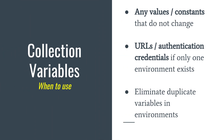Use collection variables when you have values or constants that do not change. Examples include URLs or authentication credentials — any information that repeats across requests. If it's not environment-specific, it can be a collection variable. This is practical because when you export your collection, all this information stays with the collection, so you don't need to separately export the environment.